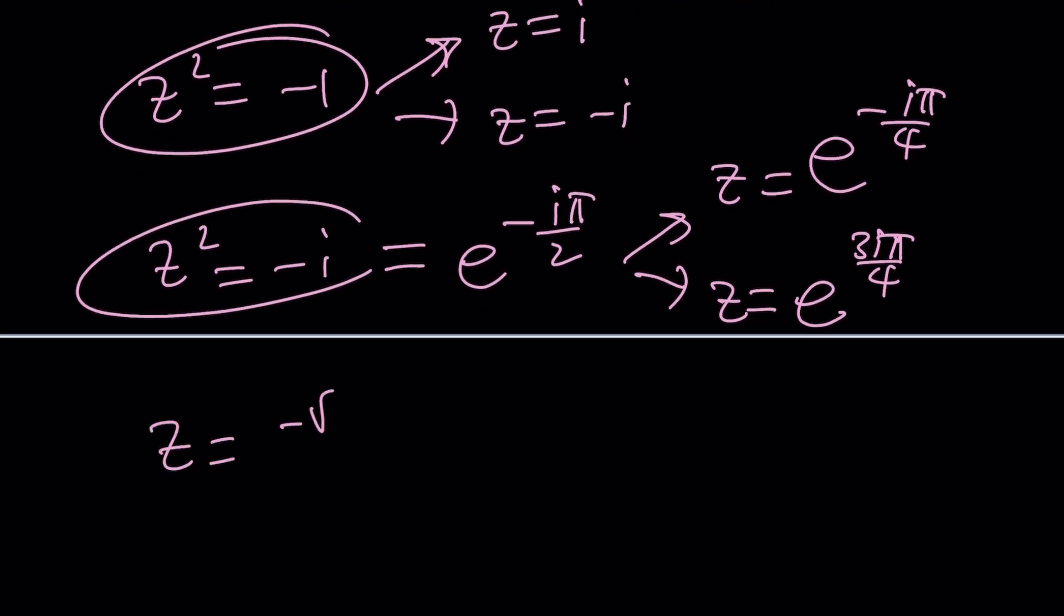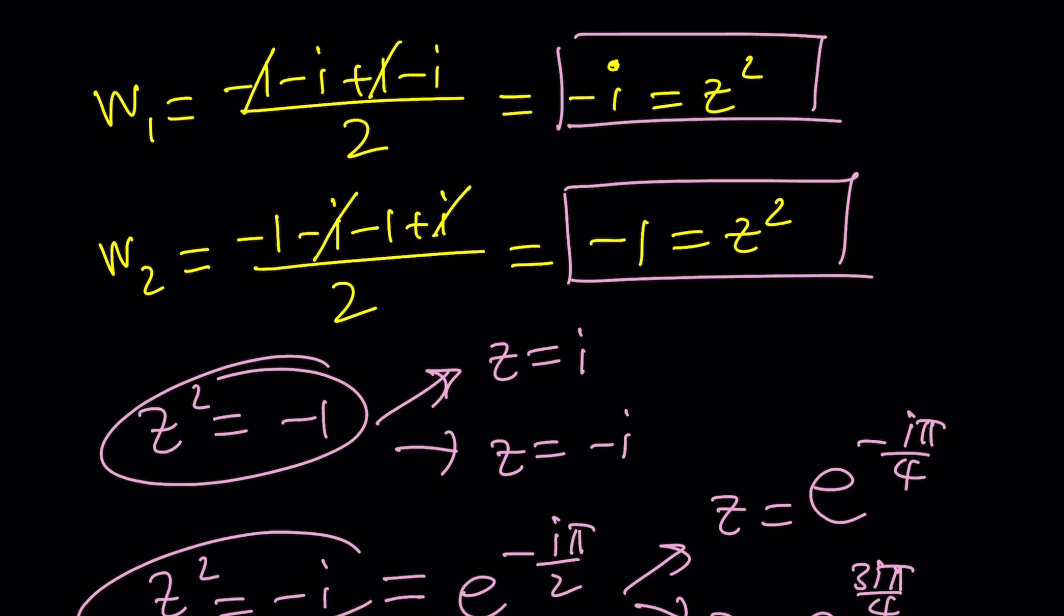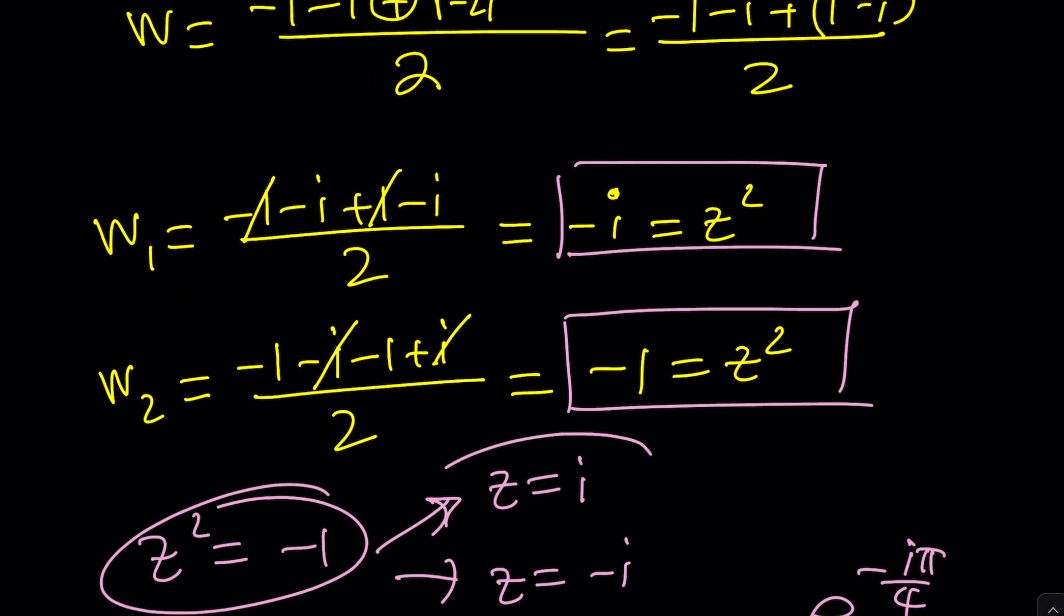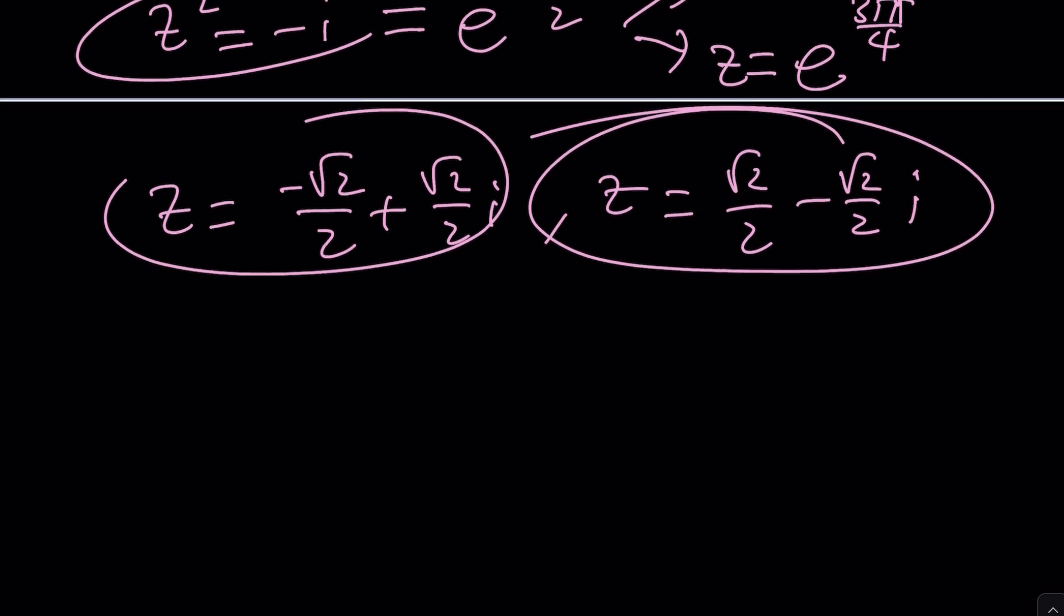And one of them is going to be negative root 2 over 2 plus root 2 over 2i. And the other one is going to be root 2 over 2 minus root 2 over 2i. So there's a total of four solutions, which makes sense because we have a quartic equation. Of course, these solutions are nicer than the other ones. Okay, cool. Now that's the first method. Let's go ahead and take a look at the second method and let me know which one you like better. Okay?